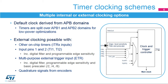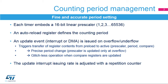The external trigger input, or ETR, can be configured as an external clock with a digital filter, programmable edge sensitivity, and a first basic prescaler stage to reduce the frequency of incoming signals. Lastly, quadrature signals from an encoder can be processed to provide a clock and a counting direction, as described later in this presentation.